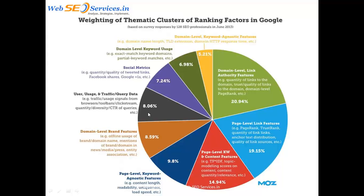Another closely related factor is user traffic behavior. Suppose you are the third result in Google and two results are above you, but the majority of people click on your website and fewer people click on the first two results — there is a very high chance you will replace those top two results soon. Traffic — people clicking on your website and staying on it — is very important for search engine rankings. The longer people stay on your website, the sooner you will move to the top position.